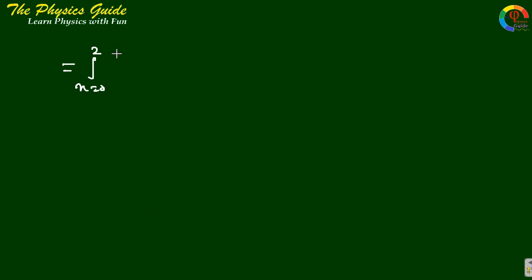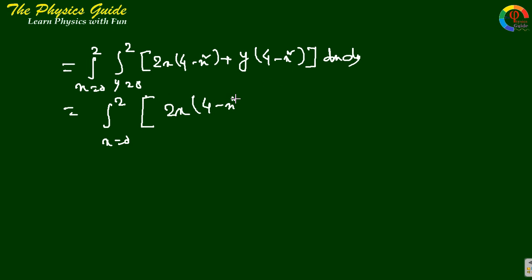This gives 2x(4 - x²) + y(4 - x²) dx dy. Taking the integration with respect to y: 2x(4 - x²)y + y²/2, evaluated from y = 0 to 2, dx.